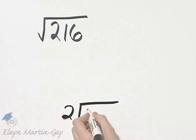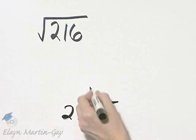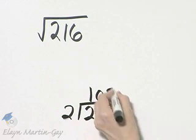For example, I know 2 divides into 216 evenly. 2 divides into 1, 0, and 2 divides into 16, 8 times.